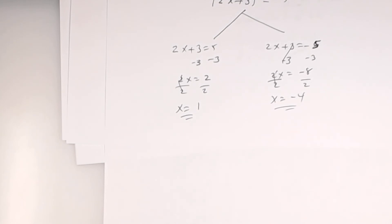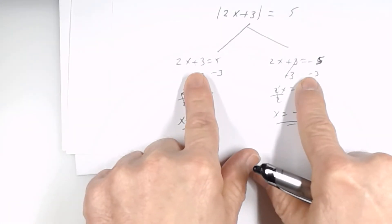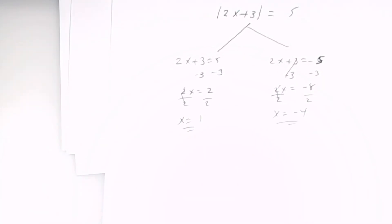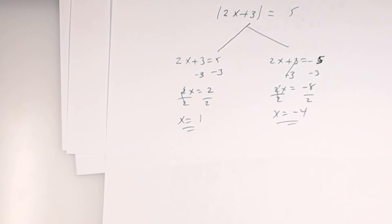When you have an absolute value equation, you've got to isolate the absolute value, then split it into two equations. Rewrite the equation without the absolute value bars, and on the other equation take the opposite of the number from the other side. For us, the absolute value equation when split apart gives two linear equations — unlike the radical, where you could end up with a quadratic as well.